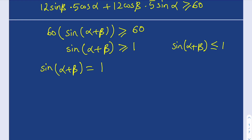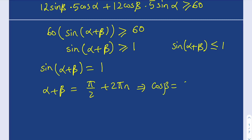This equation has solutions when α+β = π/2 + 2πn for integer n. Since α and β are complementary angles in this sense, we can safely say that cosβ = sinα and sinβ = cosα.